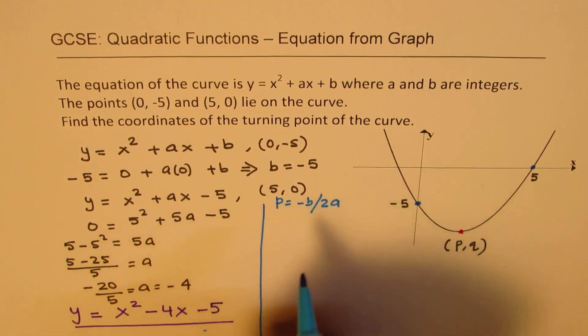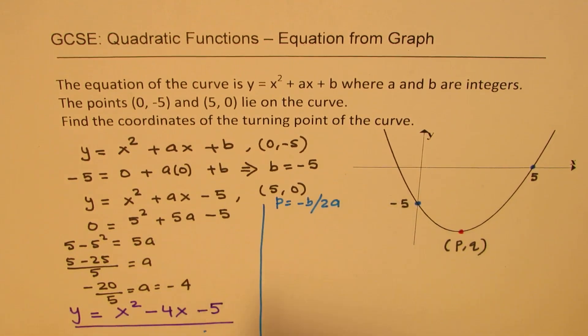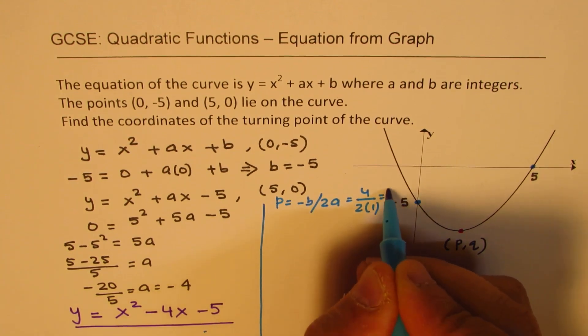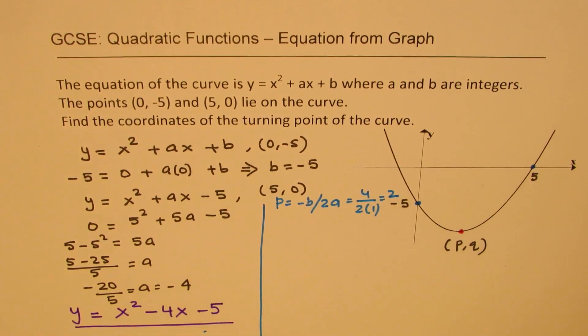Minus b by 2a could be one way of doing it. If you remember, that is the turning point: p equals negative of 4, which is 4, times a is 1, so 2 times 1. We get the value of 2 as p.